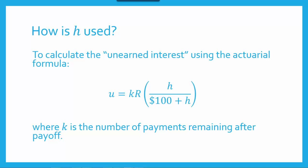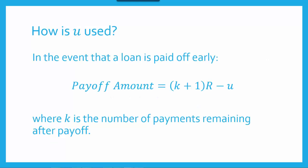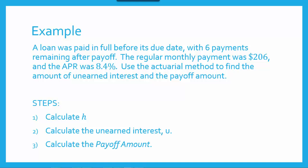K would be the number of payments remaining after payoff, and R would be the regular monthly payment. In the event that a loan is paid off early, the payoff amount is going to be (K + 1) times R minus the unearned interest U. Here, K is the number of payments remaining after payoff — in other words, after the current payment.